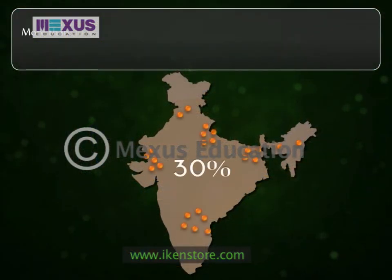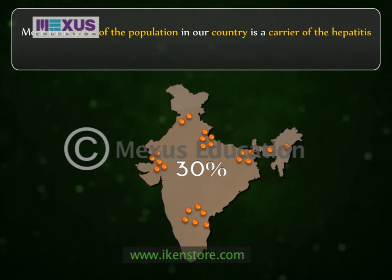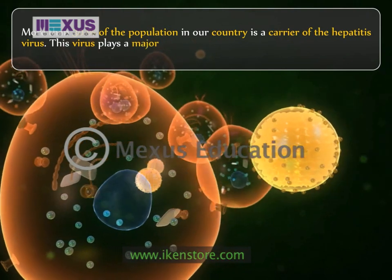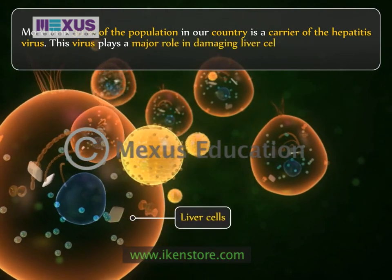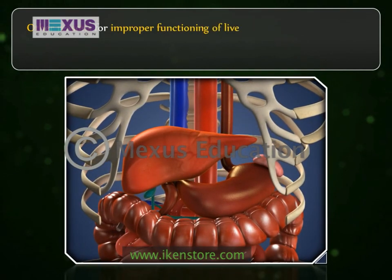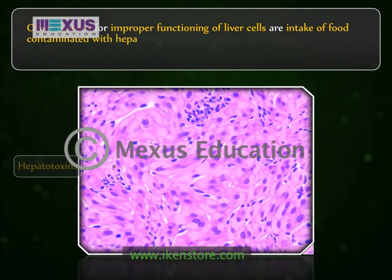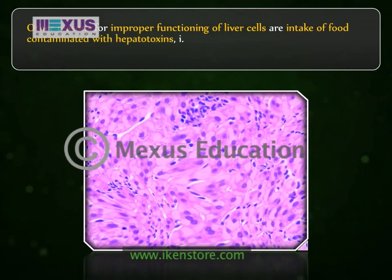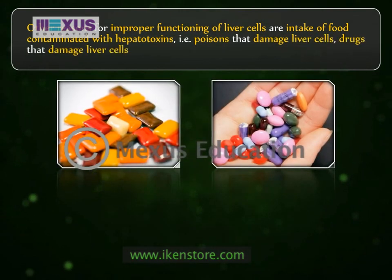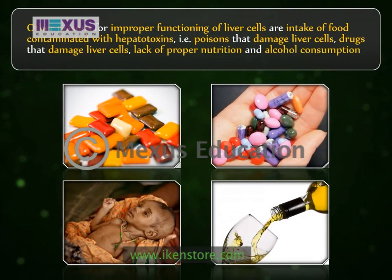More than 30% of the population in our country is a carrier of the hepatitis virus. This virus plays a major role in damaging liver cells. Other reasons for improper functioning of liver cells include intake of food contaminated with hepatotoxins — that is, poisons that damage liver cells — drugs that damage liver cells, lack of proper nutrition, and alcohol consumption.